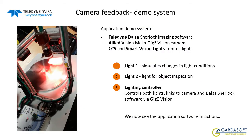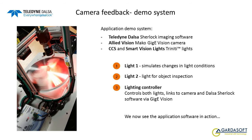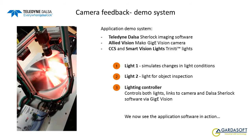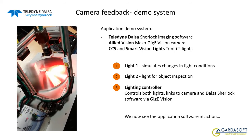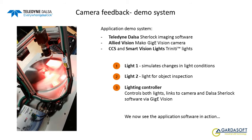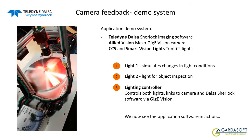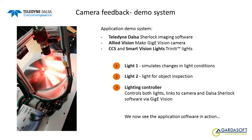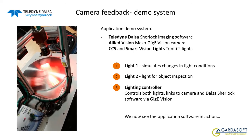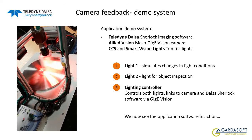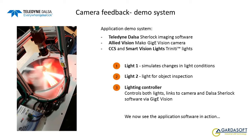We now have a demonstration of the camera feedback system just described. In this example, the lighting compensation has been built within Teledyne Dalsa Sherlock imaging software and integrates with an Allied Vision GigE Vision camera, two Trinity-enabled lights from CCS and Smart Vision Lights, and a Trinity lighting controller from GardaSoft. One of the lights simulates ambient light changes, whilst the other provides illumination for the inspected object.